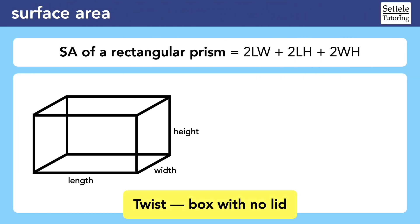For example, what if they asked for the exterior surface area of a box with no lid? We could try manipulating the formula to account for this twist, but what if we change the wrong part? Personally, I prefer to think about the outside faces individually.